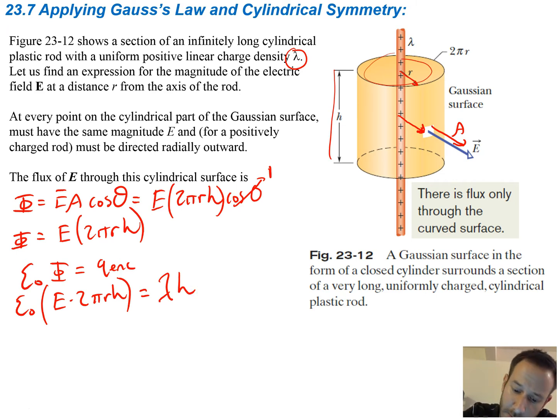The enclosed charge is also going to be equal to the linear charge density times the height, so lambda times H. Because if you remember, linear charge density is just Q over the length. Well, the length of our cylinder in this case is going to be H, or of the rod. So really it's just Q over H. So if I wanted to replace Q, I would just have the linear charge density times H.